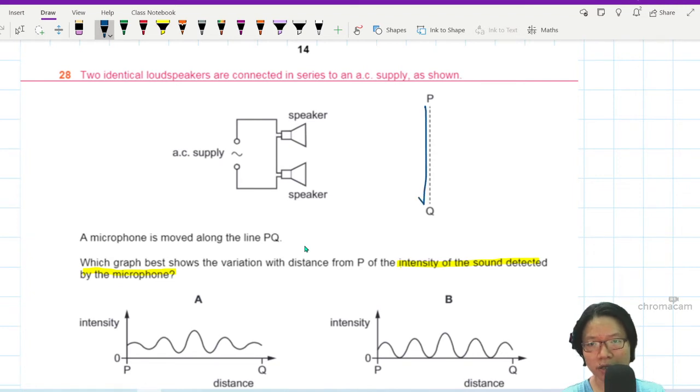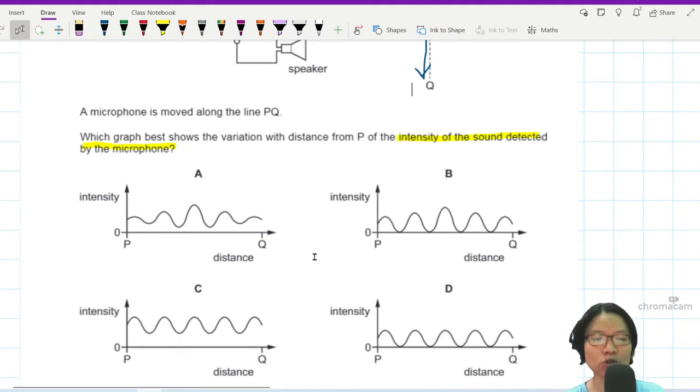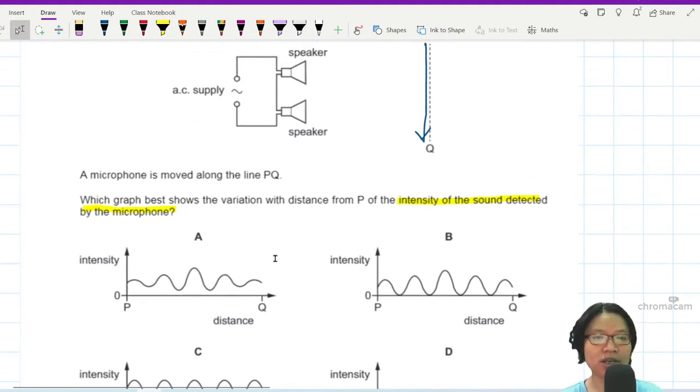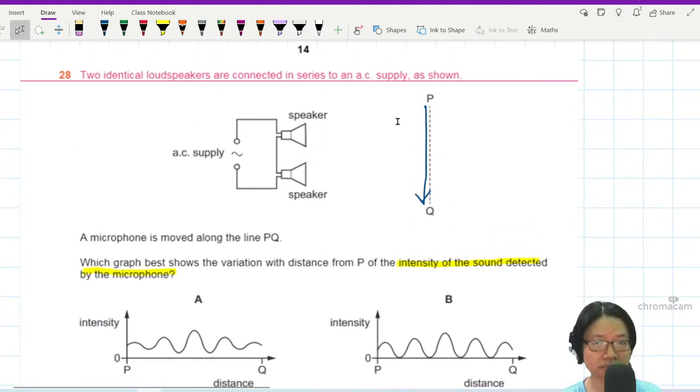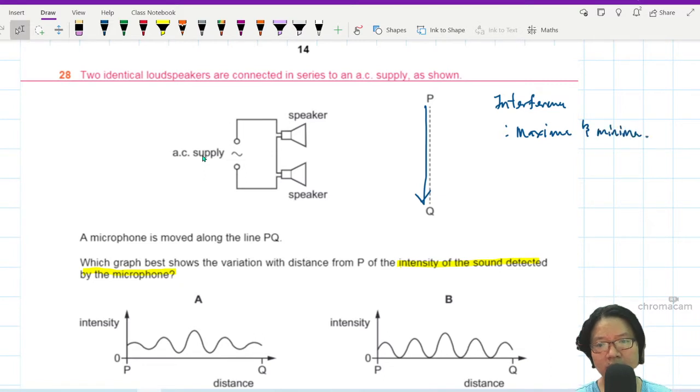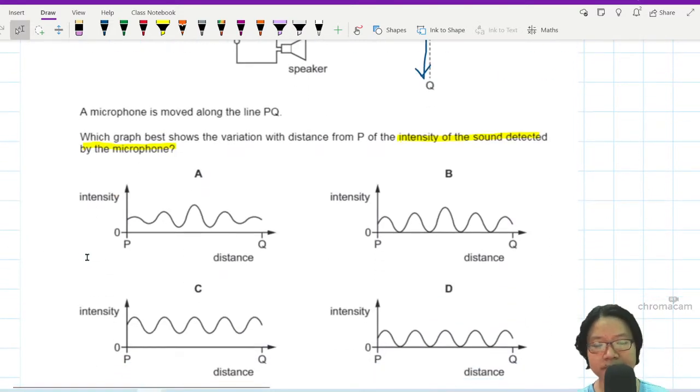So you put a mic and then you move this way. We definitely will get loud soft, loud soft. Because this is interference. The two speakers are connected to the same power supply to produce coherent waves. So interference, you will get maxima and minima. As you can tell from here, I don't really expect the maxima and minima to be uniform.